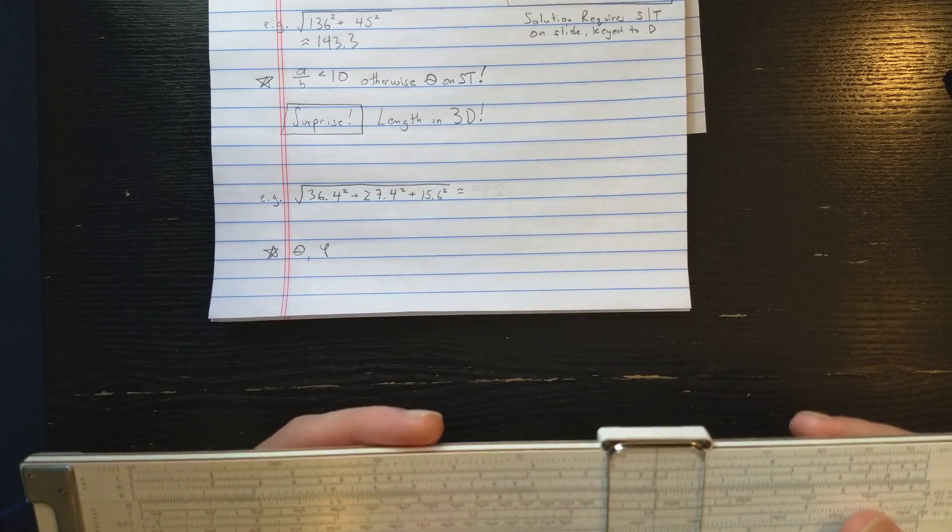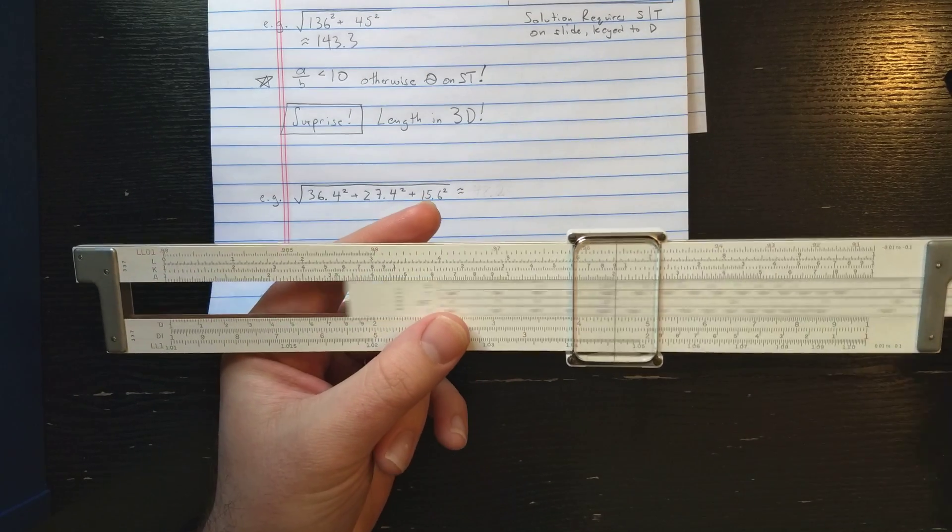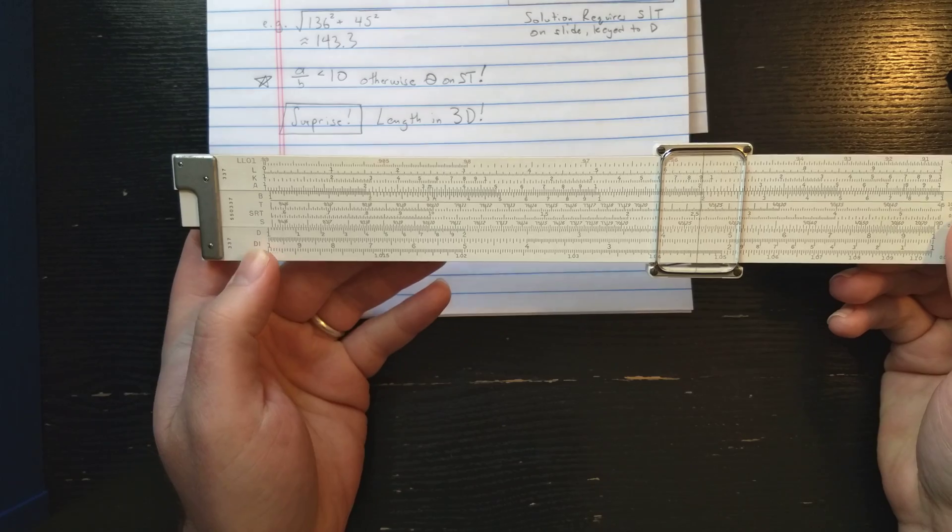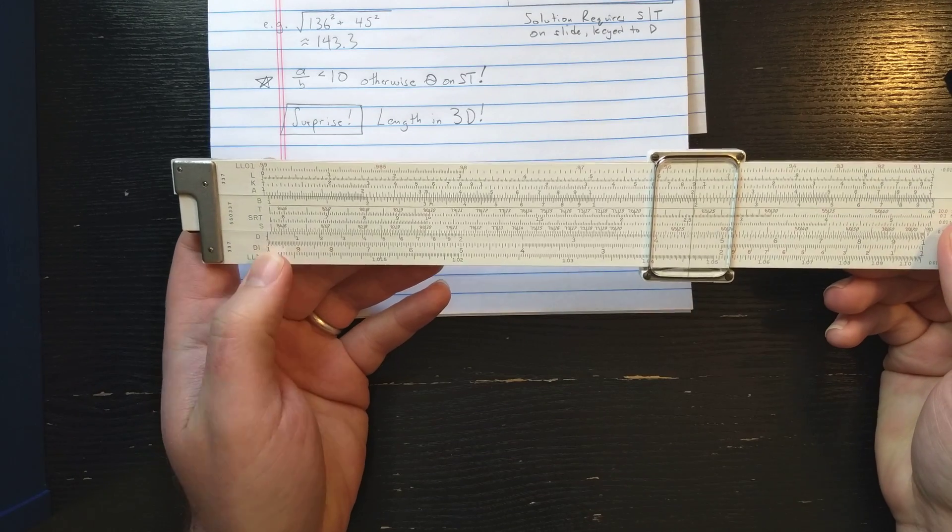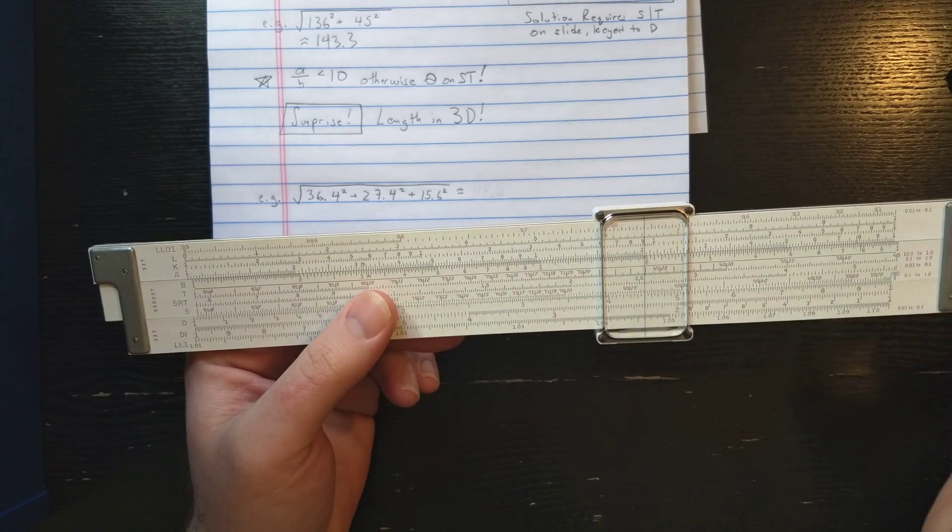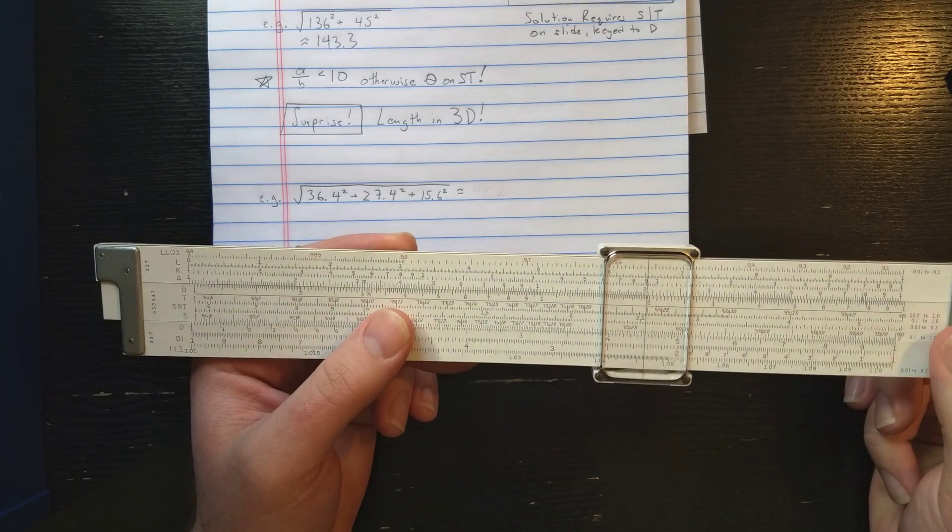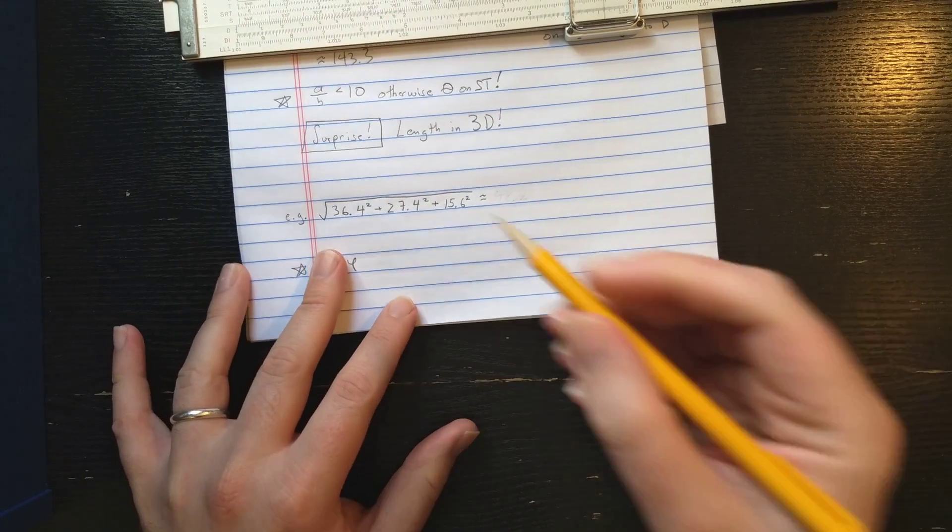Last thing I want to do here is kind of a surprise. So some slide roll manuals suggest you do this using the DI scale. If you read the K and E manual, they'll give a solution to this with a DI scale. They also give the solution that we use. I prefer that solution because it can be chained. So let's see what would happen if you chain that computation.